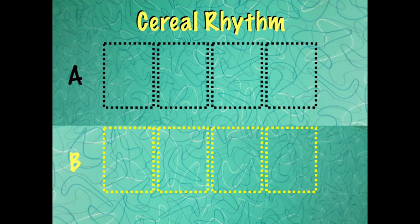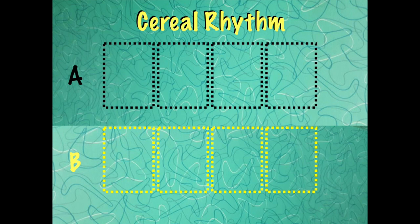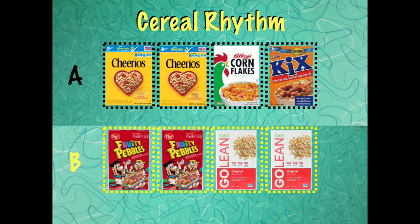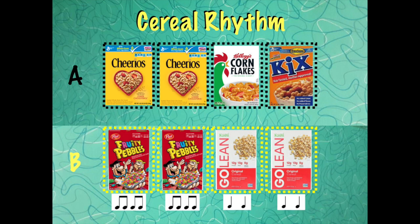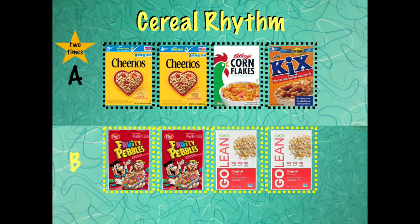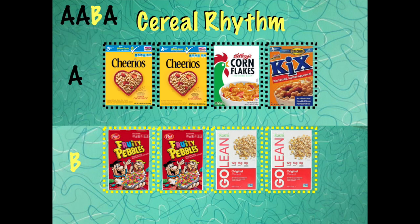Next, we're going to create an A rhythm and a B rhythm — they're going to each be different. Here is our A rhythm. First me, then you. Cheerios, Cheerios, Cornflakes, Kix. And here is our B rhythm. First me, then you. Fruity Pebbles, Fruity Pebbles, Kashi, Kashi. We're going to say our A rhythm two times, then our B rhythm one time, then come back and say our A rhythm one last time. This makes an A-A-B-A form — two A's, one B, and one A.